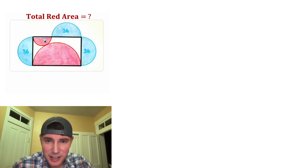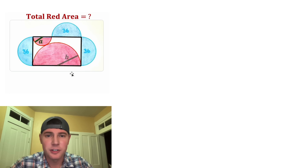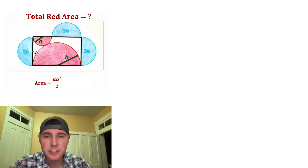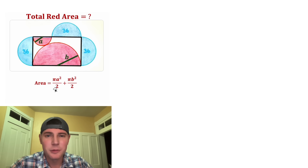First up, let's assign a radius to the smaller red semicircle — let's call it a. Let's assign a radius to the larger red semicircle and call it b. So ultimately we're trying to find the area of these two semicircles. For the top semicircle it'll be πa²/2, and for the bottom one it'll be πb²/2.